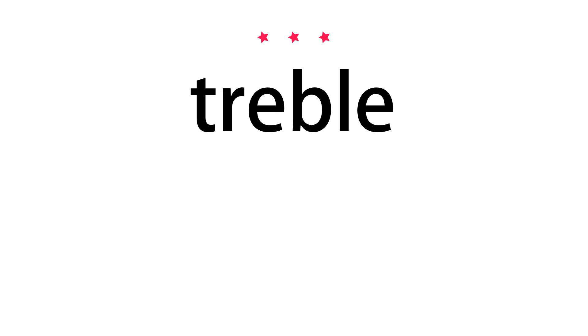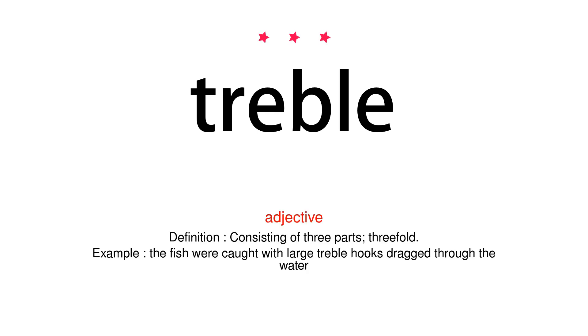Treble. Adjective. Definition: consisting of three parts, threefold. Example: the fish were caught with large treble hooks dragged through the water.